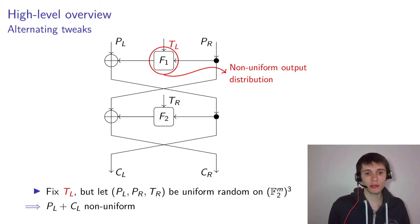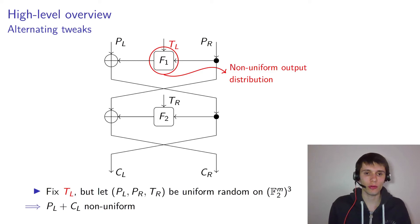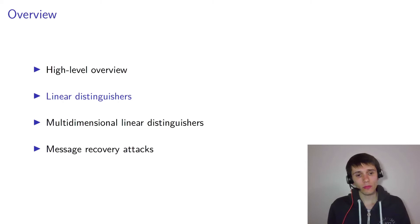This is the output when the plaintext is uniform random and the right half of the tweak is uniform random. Then after two rounds, the ciphertext on the left half XOR'd with the plaintext on the left half — which is actually this output of F1 — must therefore be non-uniform. For the actual attack, we need to iterate this over multiple rounds and quantify what we mean by non-uniform. That's what we're going to use linear cryptanalysis for.